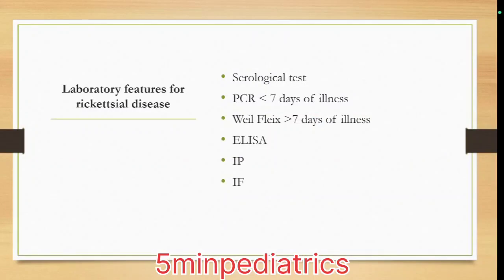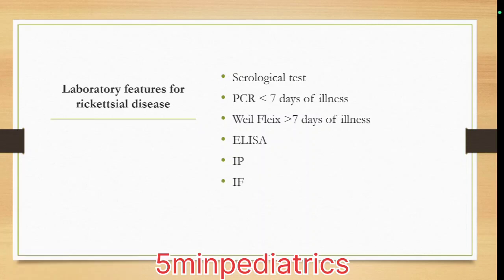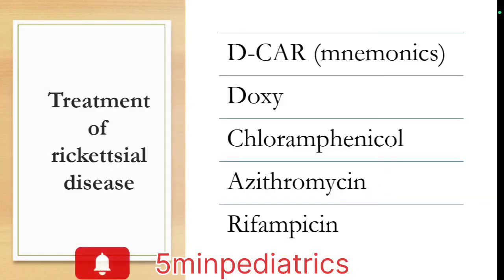What are the serological tests? If the child's illness is less than seven days, send PCR. If the illness is more than seven days, send either Weil-Felix, ELISA, IFA, or IgM. These tests confirm the diagnosis, after which you start rickettsial treatment.